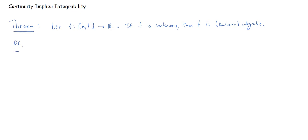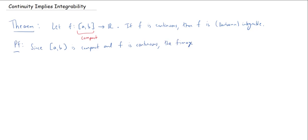First, because we're working on a compact interval and we have a continuous function, we know that the image is also going to be compact. In particular, it'll be bounded, and we even know that it's uniformly continuous. Since this interval is compact and f is continuous, the image f([a,b]) is bounded, and f is uniformly continuous.